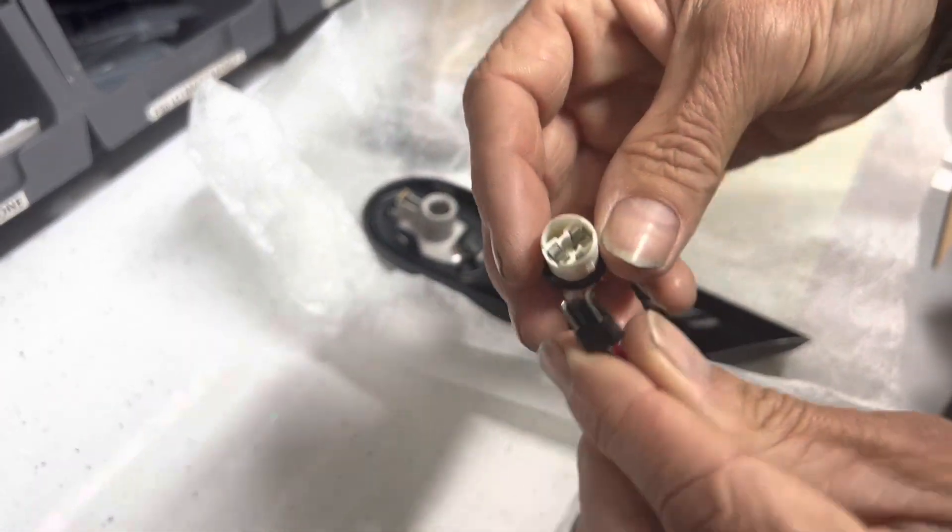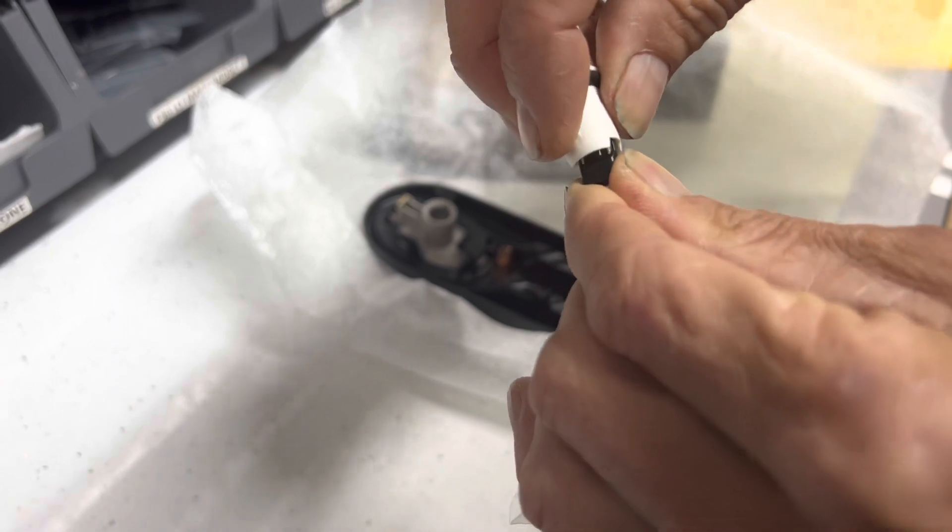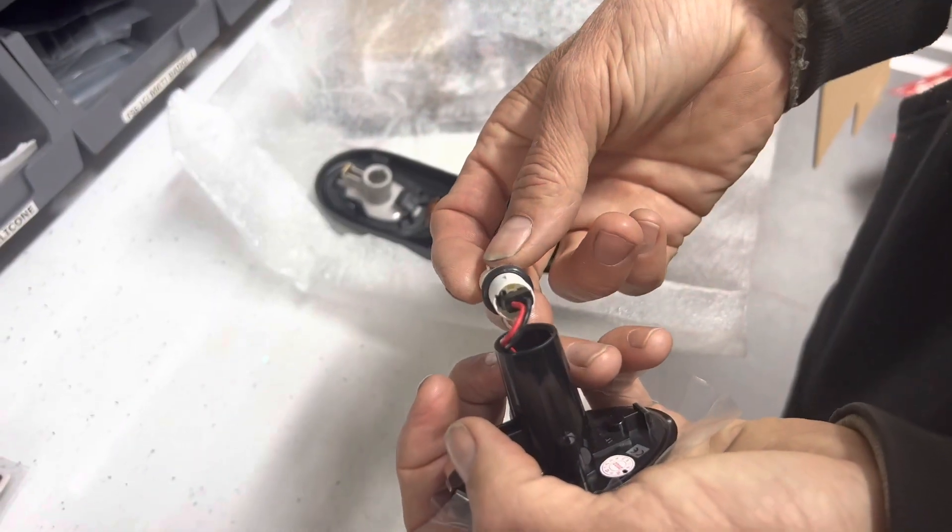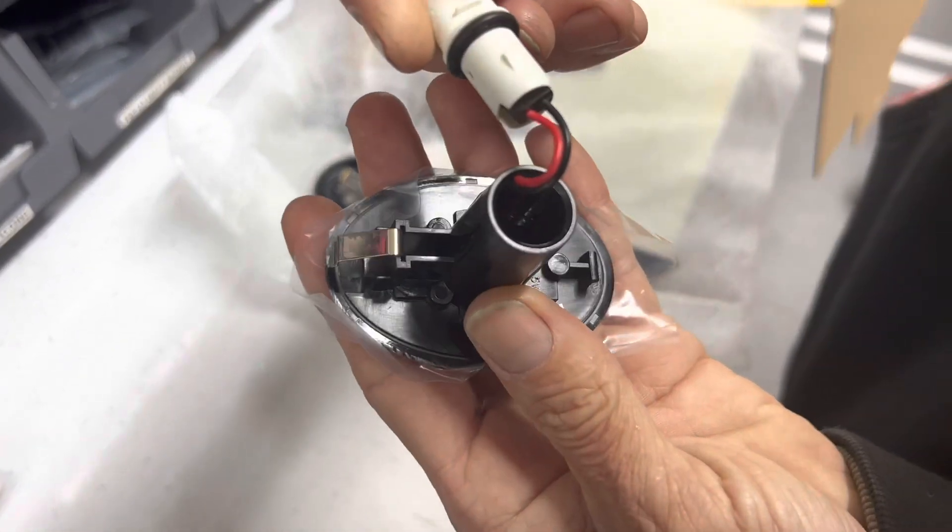Once you've done that, you can fit the spade back into that one. Make sure it's pushed in nice and securely like that. Once you've got the spade in and it's nice and secure, you've got to twist these wires so they go back inside.